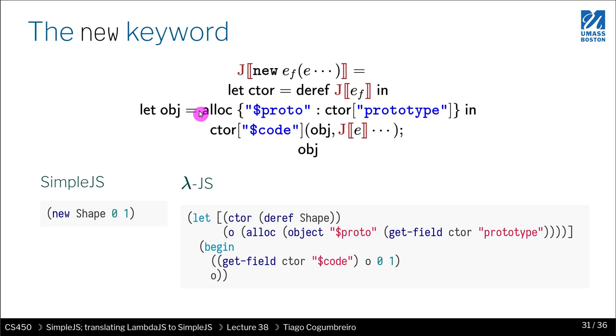Then the third line, what we're doing is we're allocating the object proto. Oh, we did that already. And finally, what we do is we look up in the object the code and then we call it, and we have to pass OBJ, right? And we have to translate every argument. There's all of this going on.